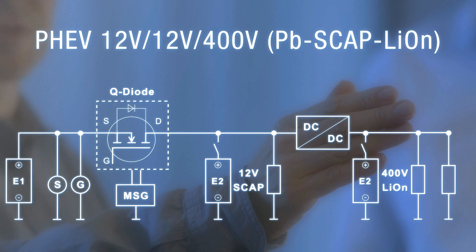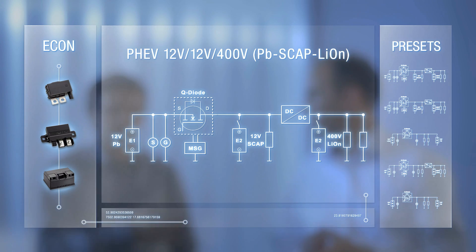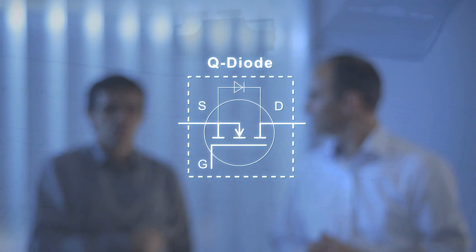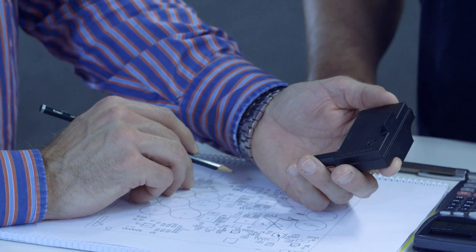Design your supply system topology using the Q diode by Eberspecker Controls. The Q diode is renowned for its robustness when it comes to switching high currents.